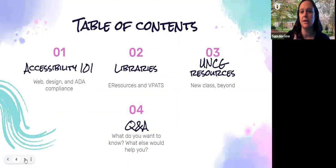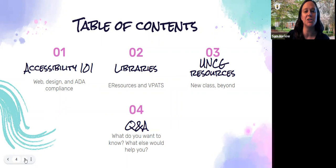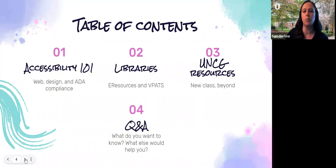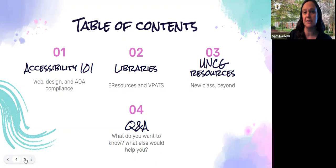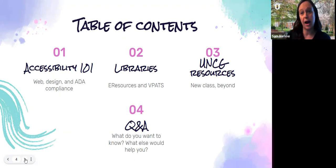Today we're going to go over the basics, because every time I do a session like this, I just want to make sure we're all on the same page about some definitions and the important stuff going on with accessibility and higher education. We're going to talk about how accessibility affects our collections — specifically e-resources and VPATs. And then we're going to talk about some new UNCG resources about accessibility. This should leave us with plenty of time for questions specific to your job and accessibility.